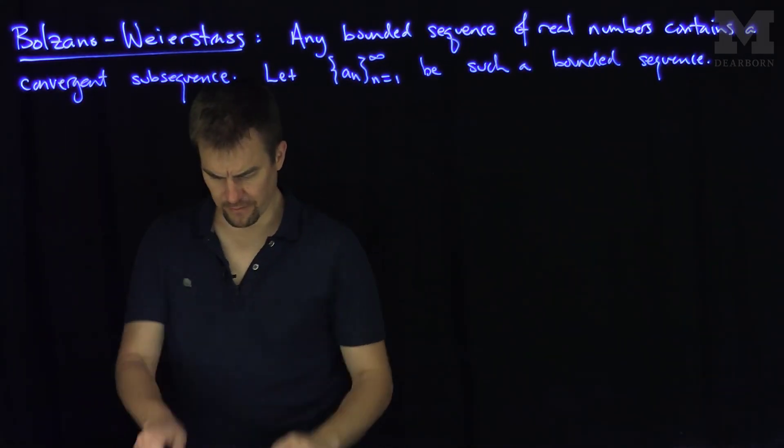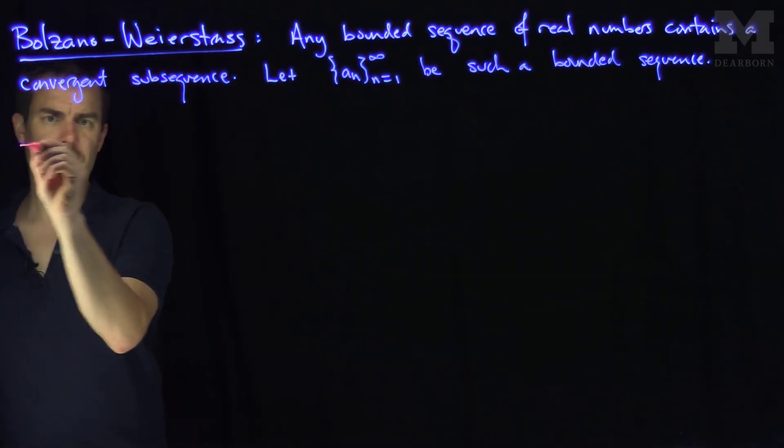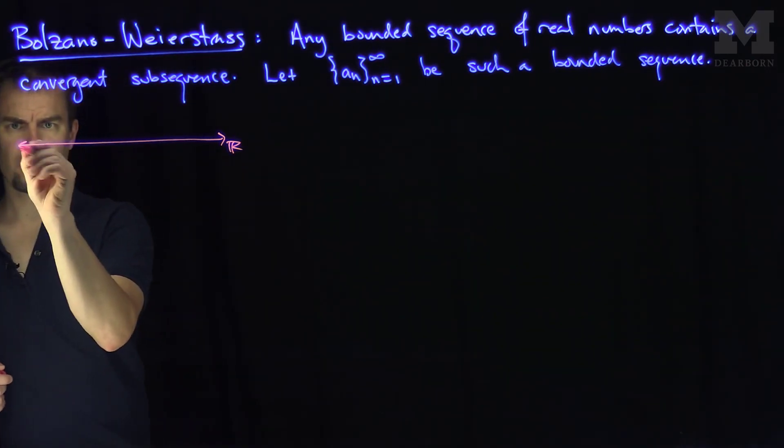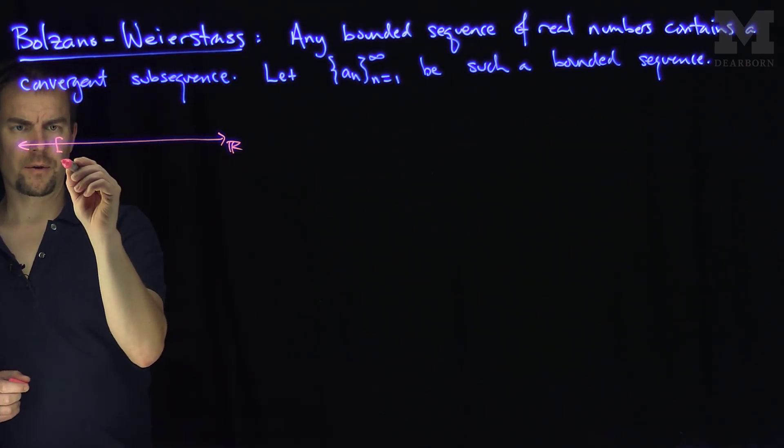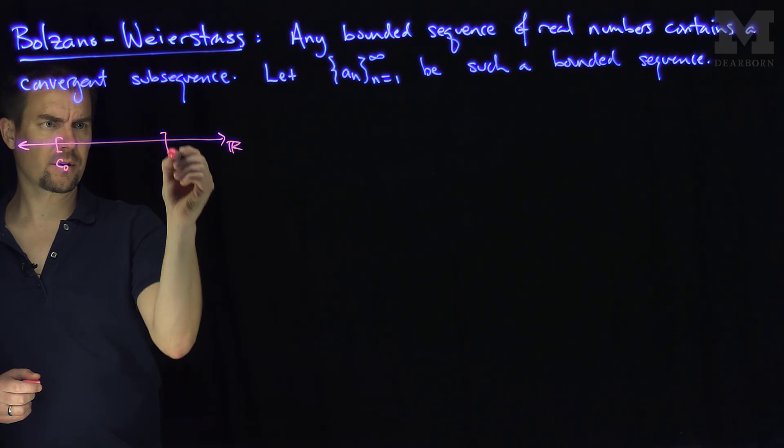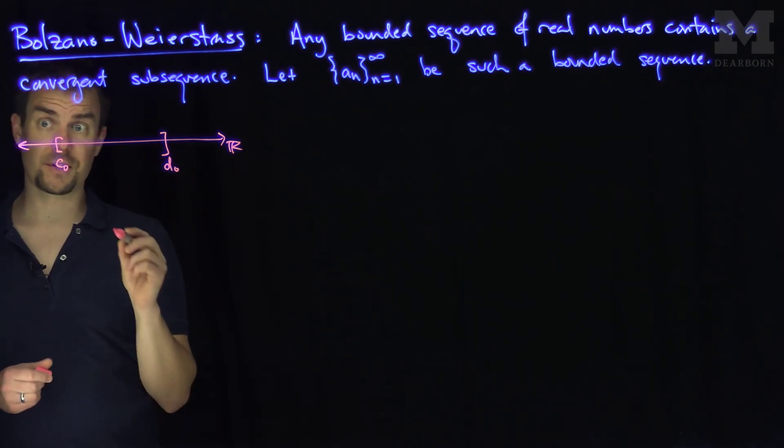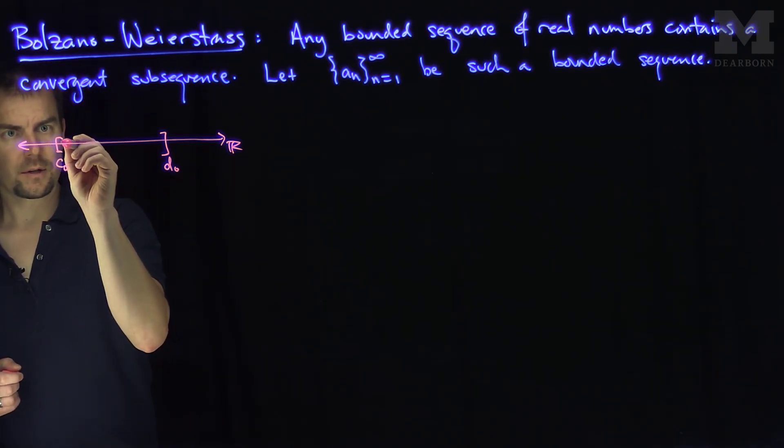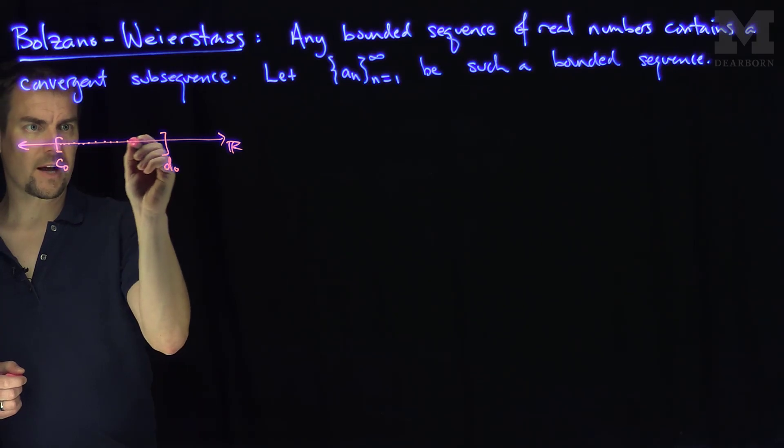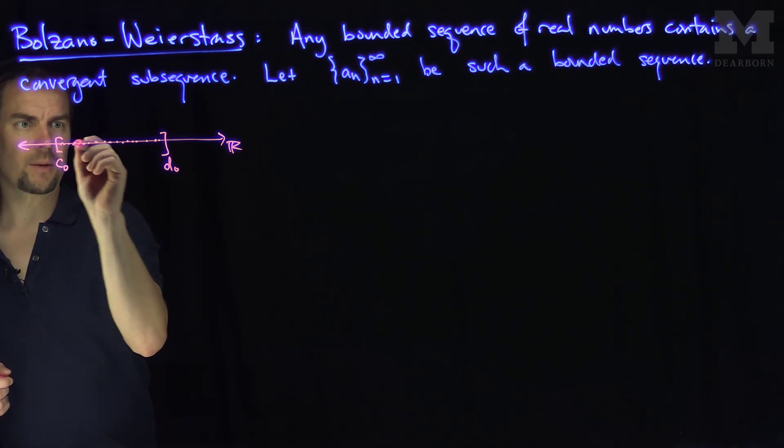Then the idea of the proof is the following. The idea is that if this is the real line, then there is a value, let's call this point over here c0, d0, some closed c0, d0, where all of the sequence resides. So all the sequence resides in this regime over here.